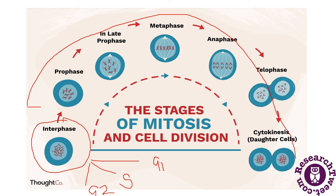After interphase, the cell enters prophase — the first stage of mitosis — in which chromatin condenses into discrete chromosomes. As you can see in the diagram, there are a number of chromosomes condensing in prophase.